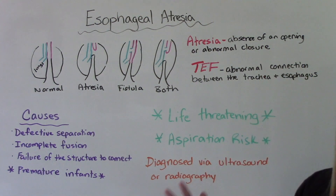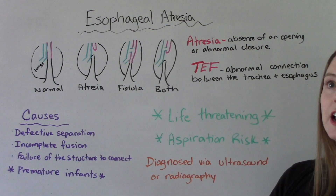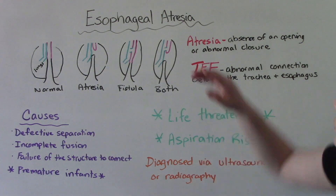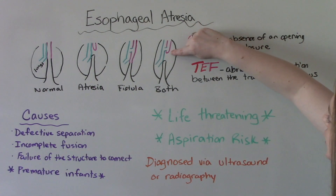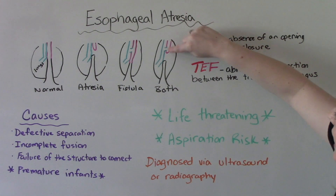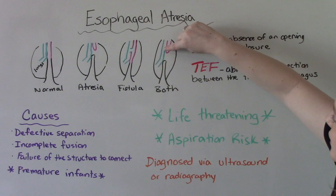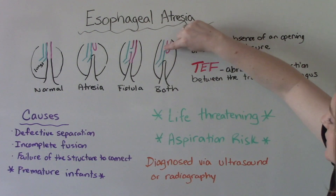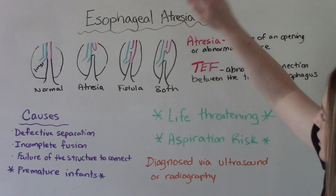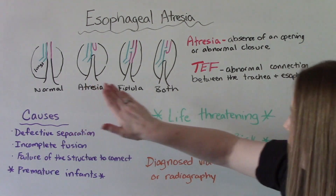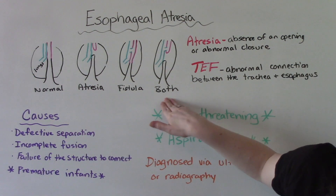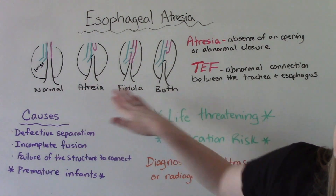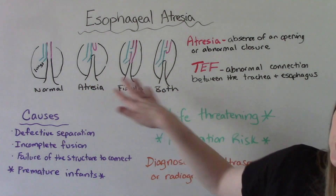And then finally, sometimes you have both: the abnormal closure — that atresia of the esophagus — and the fistula connecting the two. So: normal anatomy, atresia, a fistula, and both. You could have a variety of issues here.